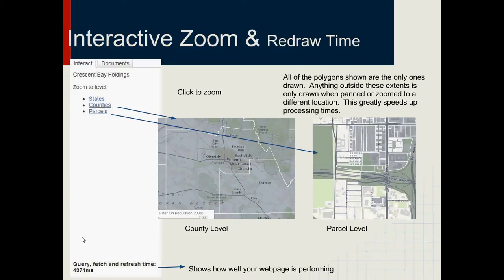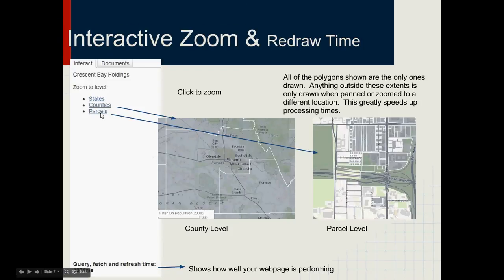Starting with the interactive zoom and redraw time — as you can see here, in the interact tab, you start at state level, click on counties and it'll zoom you down to county level. I have it centered on Maricopa County because that's the county we use the most. When you click on parcel level, it takes you all the way down and the polygons are drawn. If you pan one way or the other, that stuff gets drawn. Down here it shows you how many milliseconds it takes — showing how well your webpage is performing.